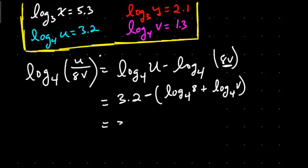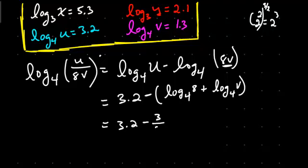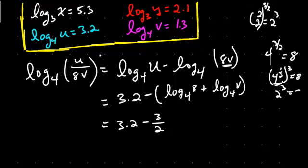So we're going to get 3.2 minus log base 4 raised to what power equals 8? Well, 4 is 2 squared, and 8 is 2 cubed, so I need 4 raised to what power equals 2 cubed. That's 3 halves, because 4 to the 3/2 equals (4 to the 1/2) cubed, which is 2 cubed equals 8. So that's minus 3 halves, and then minus log base 4 of v, which is 1.3.